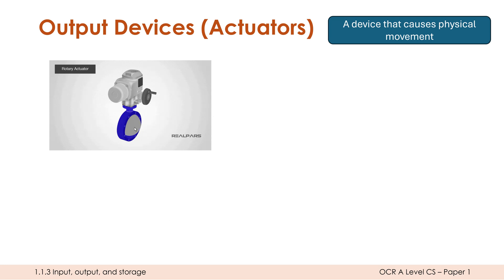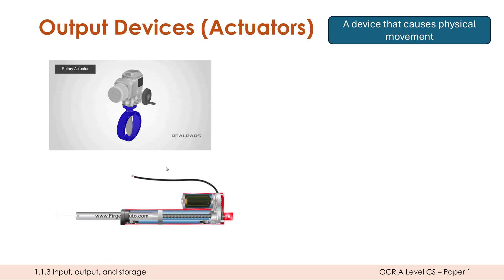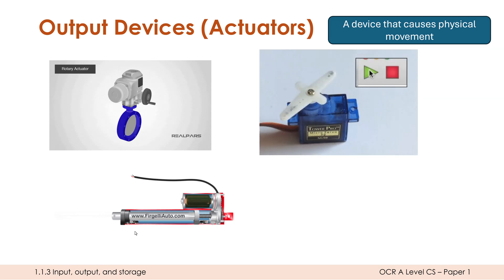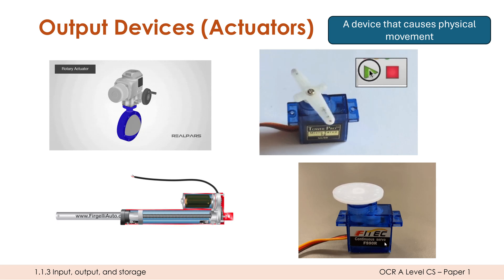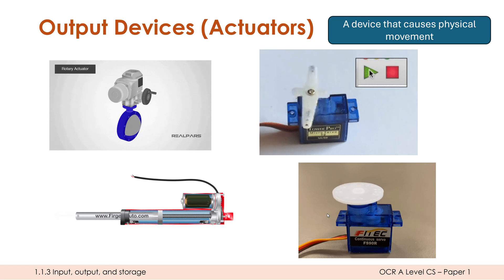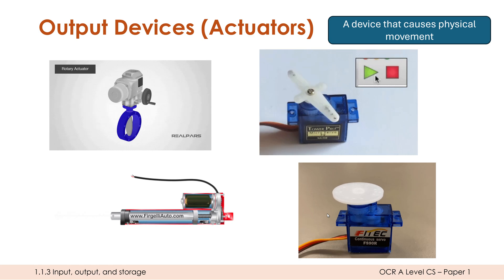This actuator could be used in a pipe as a valve to stop or allow water flow. A linear actuator — shown here with the motor driving the movement — could be used for a door locking mechanism. This rotation actuator moves through just a set range and could be used for a CCTV camera rotating around a certain radius. This last one is a spinning disc — you can see the word 'servo' on it, which is just another word for an actuator, often used in robotics. It could be used for a fan. Actuators are output devices because the computer sends a signal and the actuator acts on it.